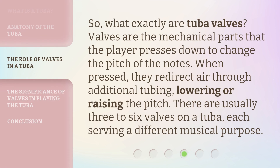So what exactly are tuba valves? Valves are the mechanical parts that the player presses down to change the pitch of the notes. When pressed, they redirect air through additional tubing, lowering or raising the pitch. There are usually three to six valves on a tuba, each serving a different musical purpose.